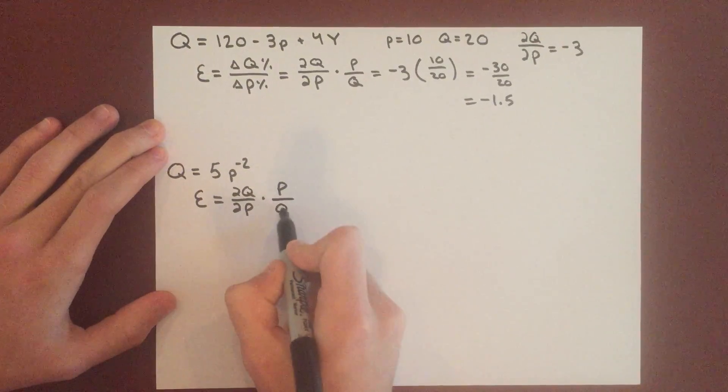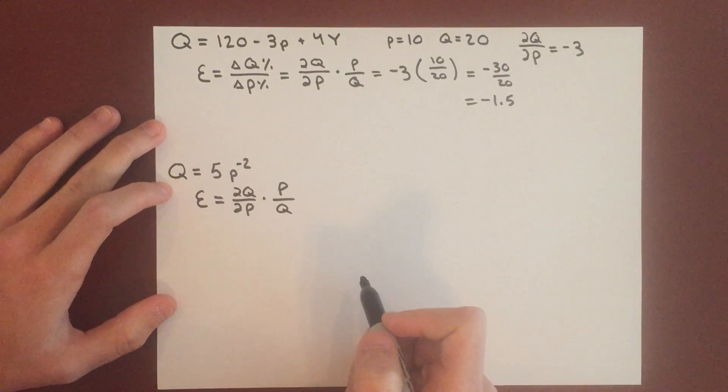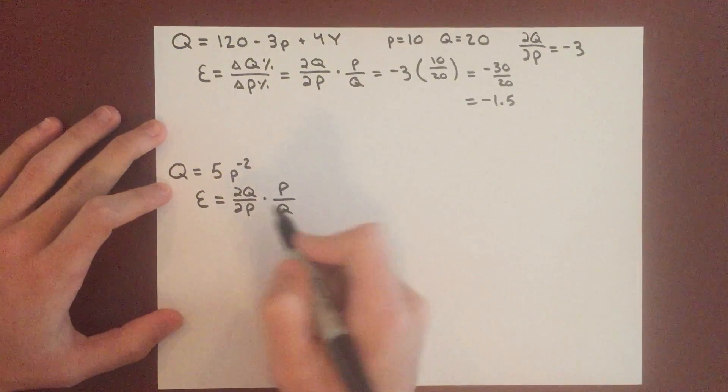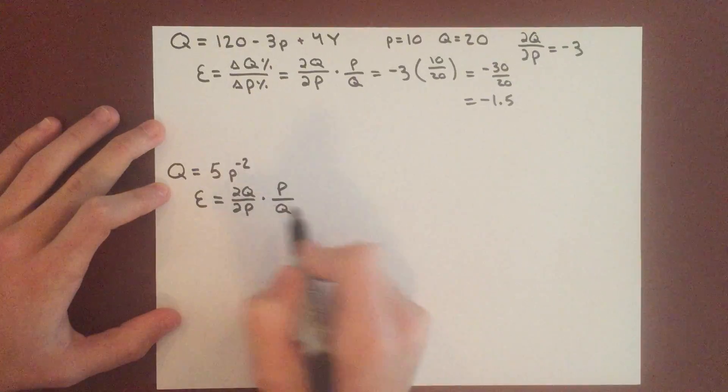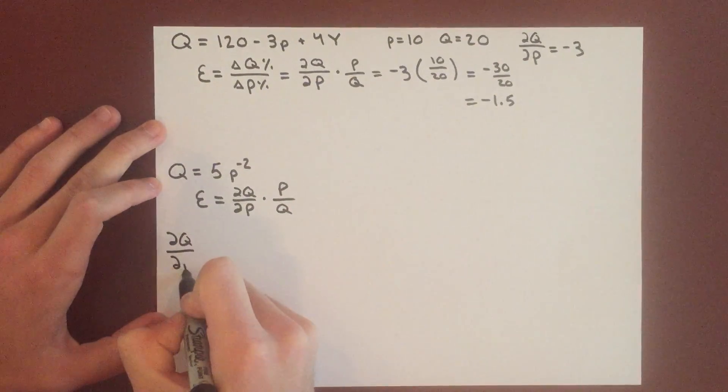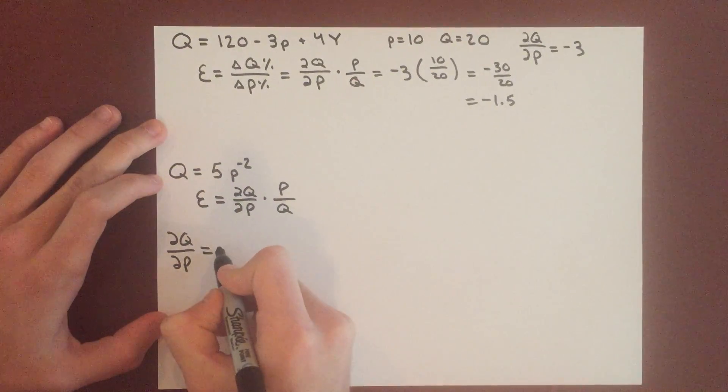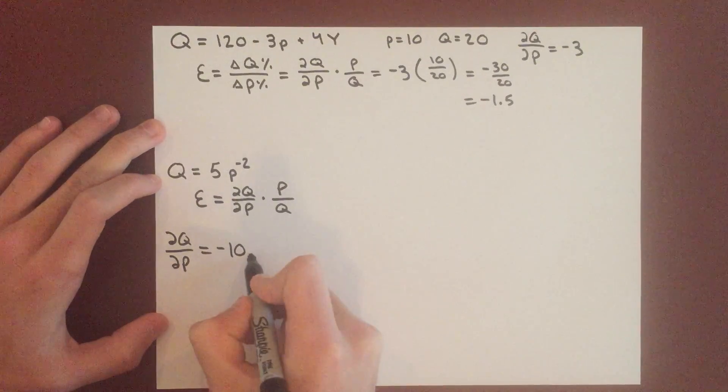we haven't seen a change yet in the amount of quantity demanded or the change in price, so we just write the equation. We'll start off by finding this partial derivative. It's a little difficult with a negative exponent but you take it just the same, so bring it down and